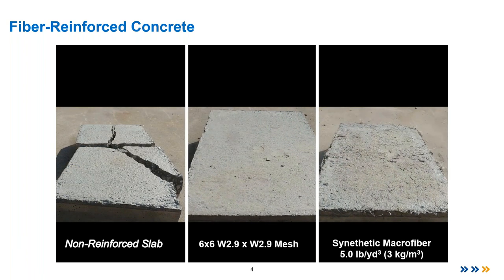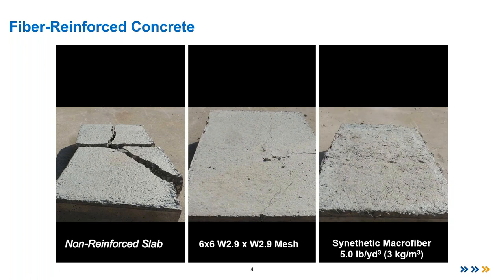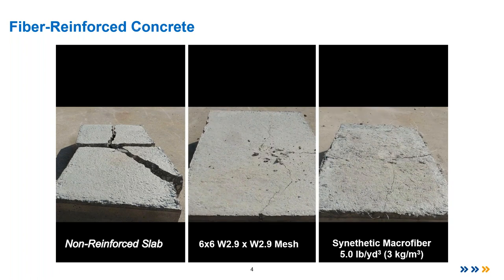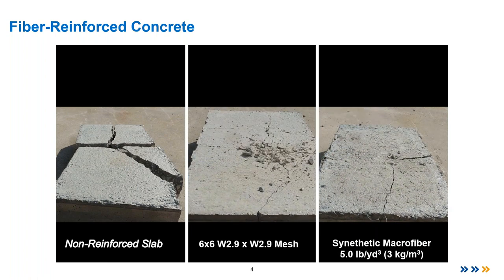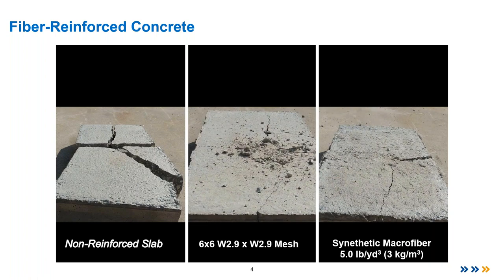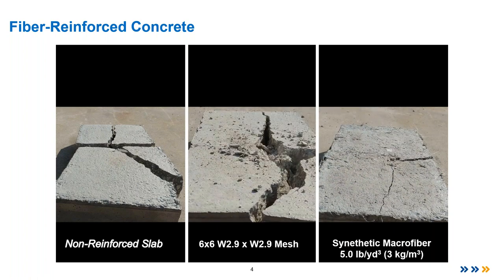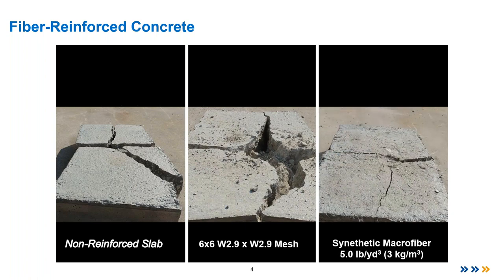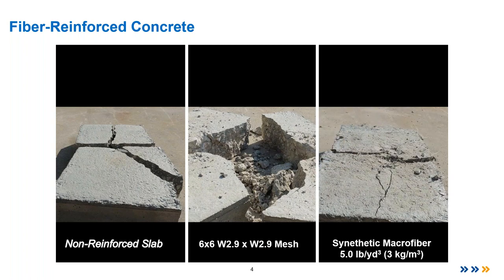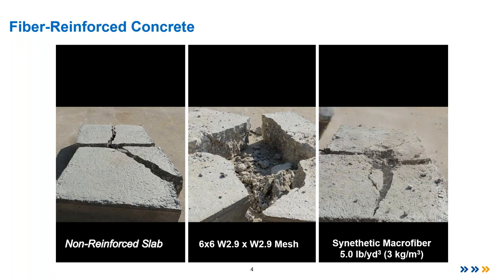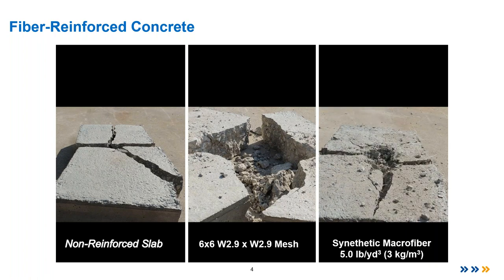What is fiber reinforced concrete? Well, it's concrete plus fibers. Concrete is usually composed of cementitious materials — cement, supplementary cementitious materials, water, aggregates, and admixtures — and when we add fibers, we're making it fiber reinforced concrete. There's only one reason we add fibers: to improve the mechanical properties of concrete. We don't add fibers to improve workability or finishability. We add them to improve the hardened properties, specifically the mechanical properties.